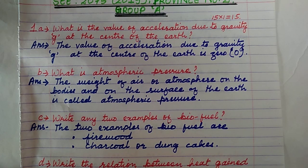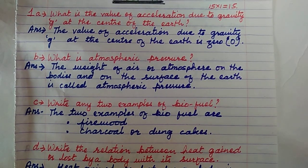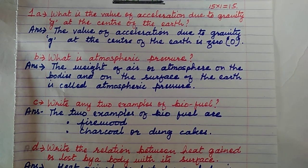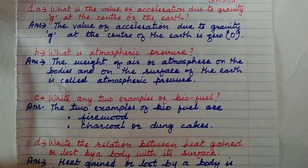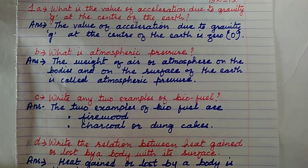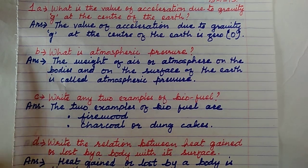Question number 1C: Write any two examples of biofuel. Biofuel is fuel made from plants and animals — organic origin. Two examples of biofuel are firewood, which is burnt for cooking food and other work, and charcoal, which is obtained by burning firewood. Also, dung cakes — cow dung or buffalo dung — are burnt as a source of fuel in villages to cook food.